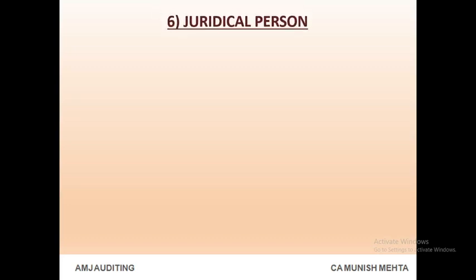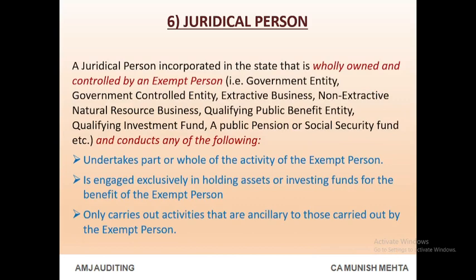Category 6 — Juridical Person: a juridical person incorporated in the state that is wholly owned and controlled by an exempt person, i.e., government entity, government controlled entity, extractive business, non-extractive natural resource business, qualifying public benefit entity, qualifying investment fund, a public pension or social security fund, etc., and conducts any of the following: undertakes part or whole of the activity of the exempt person; is engaged exclusively in holding assets or investing funds for the benefit of the exempt person; or only carries out activities that are ancillary to those carried out by the exempt person.